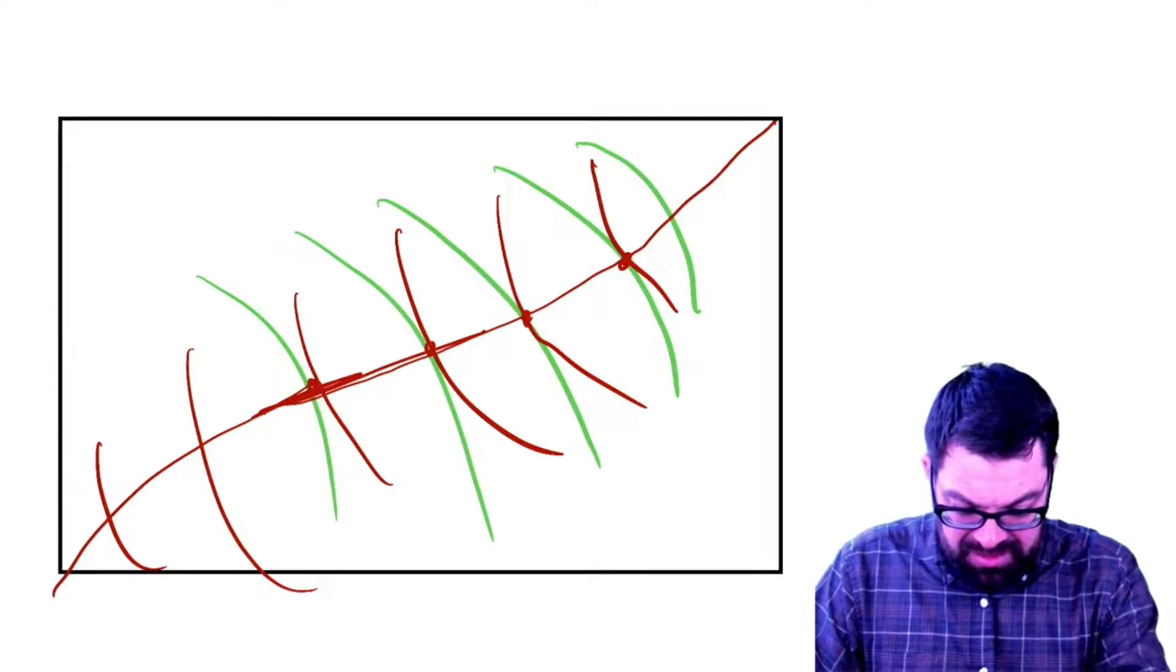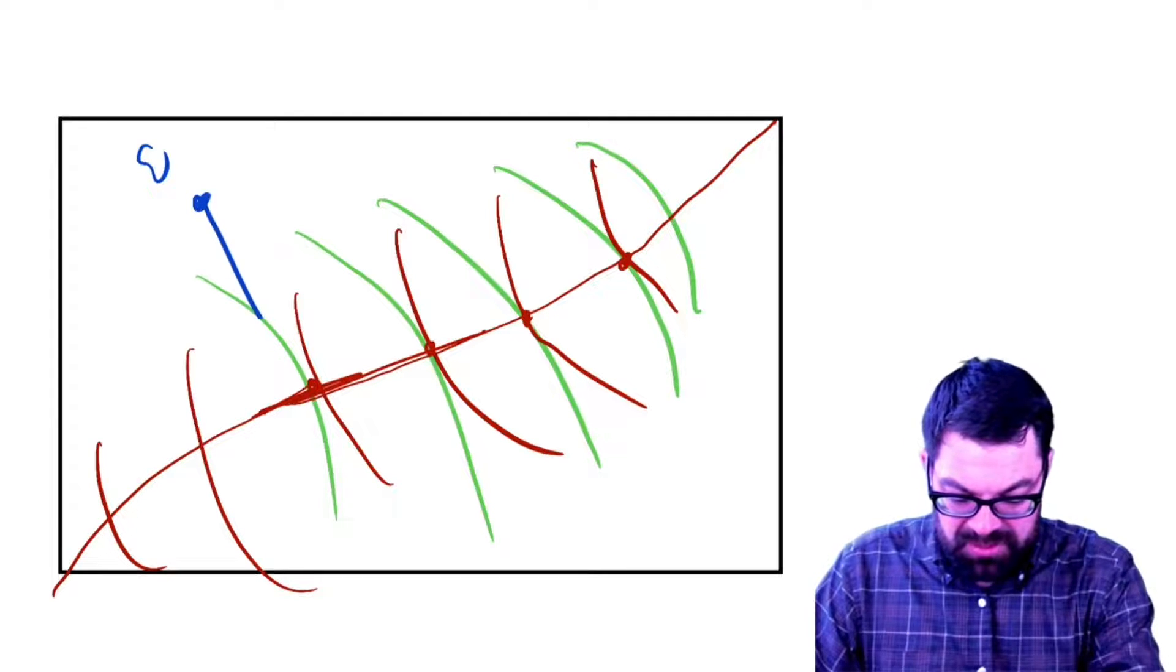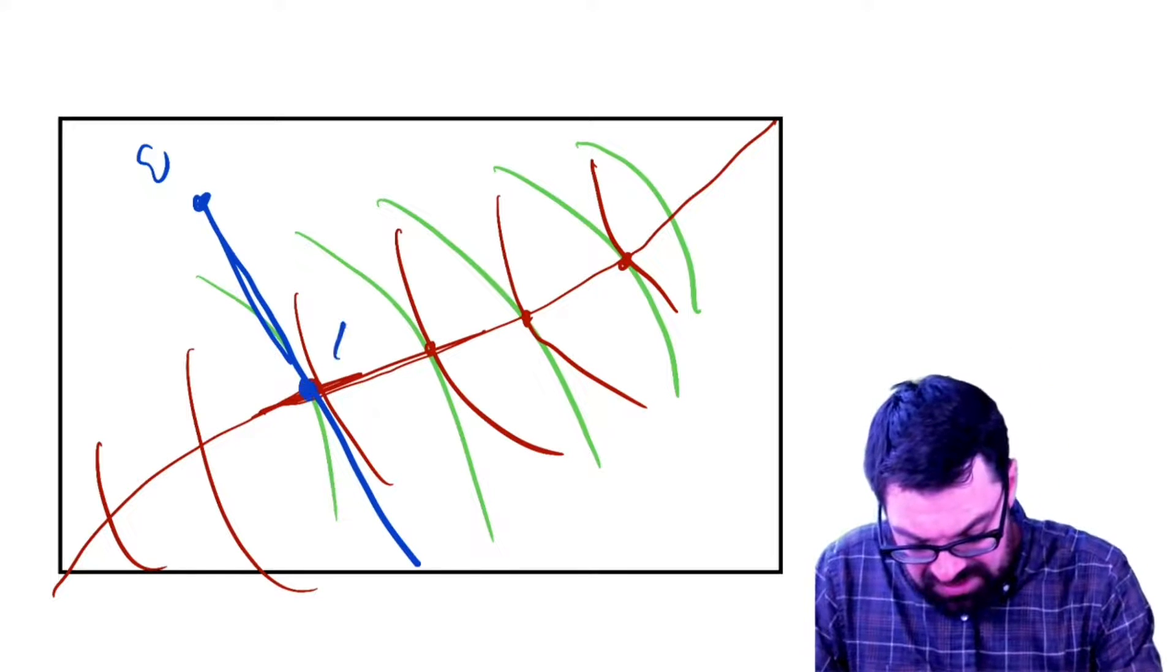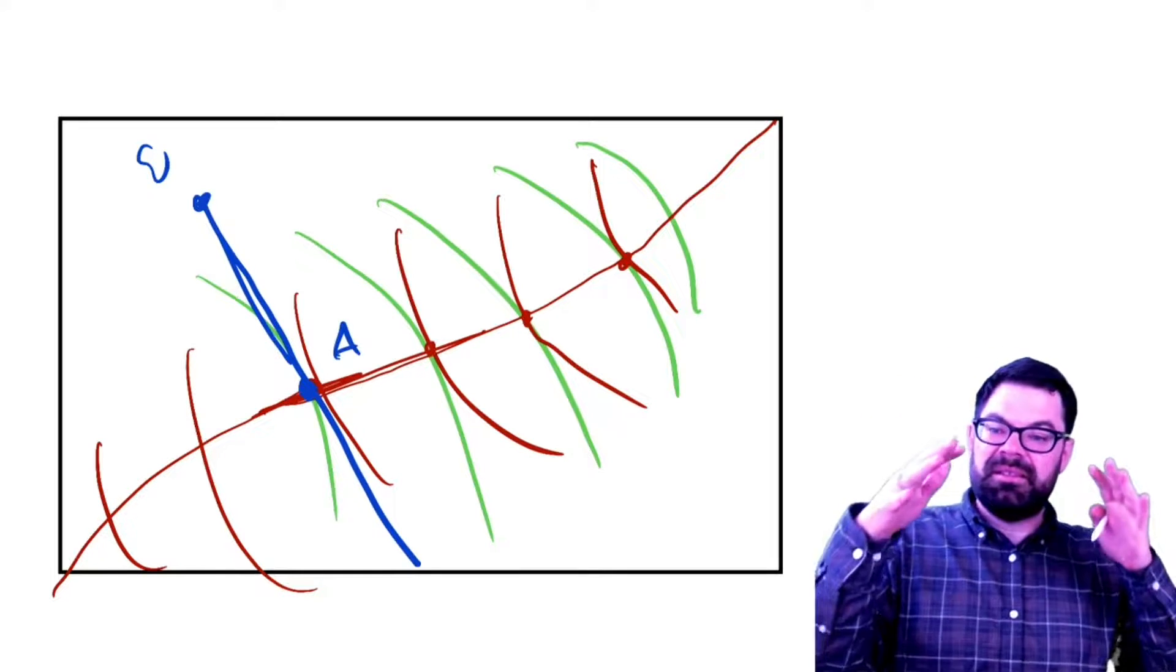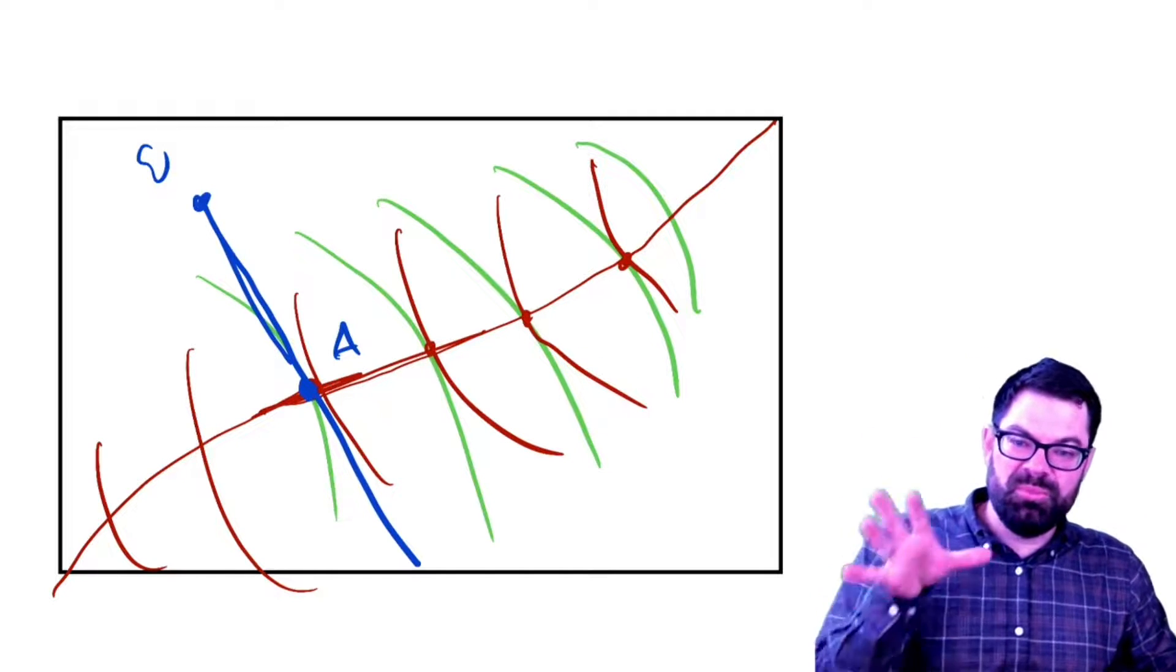So in the previous slide, the endowment point was somewhere up here. And so if the price vector is such, then that point A is the equilibrium point. That's the Pareto efficient point. But it's not the only Pareto efficient allocation we can have.